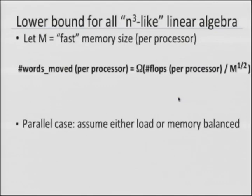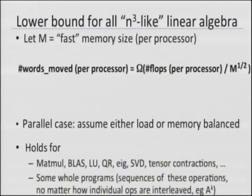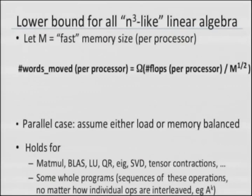People have known this for a long time — Hong and Kung proved this back in 1981 for sequential matrix multiply. But now we know it holds for just about everything: the basic linear algebra subroutines, Gaussian elimination in any variant, QR, eigenvalue problems, SVD, tensor contractions. It holds for whole programs that execute sequences of these operations, no matter how you interleave them. It's true for both dense and sparse matrices, for sequential and parallel algorithms, and even for non-standard semiring operations like the Floyd-Warshall algorithm.